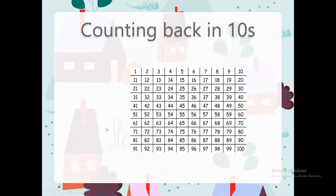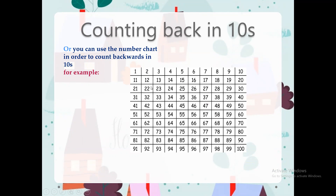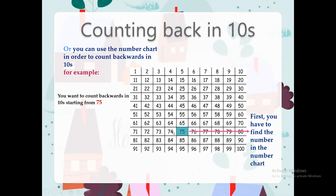Now there is another way to count backwards in tens — you can use the number chart. In order to count backwards in tens, first you need to find the number in the number chart. Then what you have to do? You will go backwards, moving back one block. For example, starting from 75, the answer will be 65. Excellent, well done.